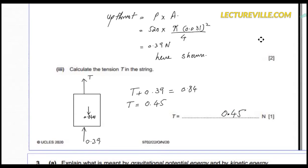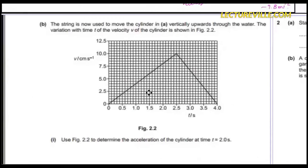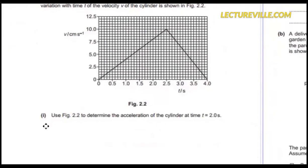Now the next part is where the kinematics comes in. The string is now used to move the cylinder vertically upward through the water. The variation of velocity of the cylinder is shown in the figure. Use this figure to determine the acceleration of the cylinder at time t equals 2 seconds. T equals 2 seconds is here and as I can see it is a straight line, so I should not be bothering which portion I find the acceleration of. I can find acceleration of the whole thing. Now I need some reference lines that I draw over here.